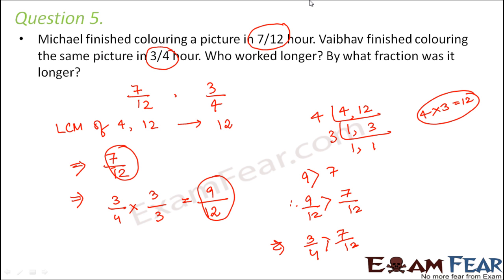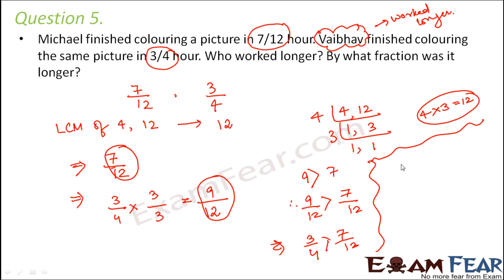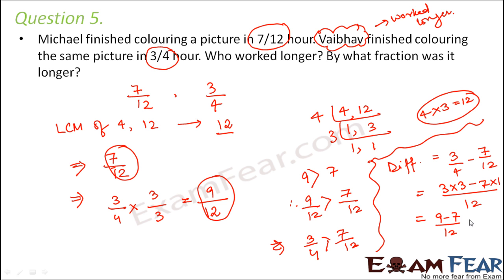Vaibhav worked for 3/4 hours, so Vaibhav worked longer. For the second part — by what fraction was it longer — we find the difference: 3/4 minus 7/12. The LCM of 4 and 12 is 12, so (3×3 − 7×1)/12 = (9 − 7)/12 = 2/12 = 1/6. The difference between the two is 1/6 hour.